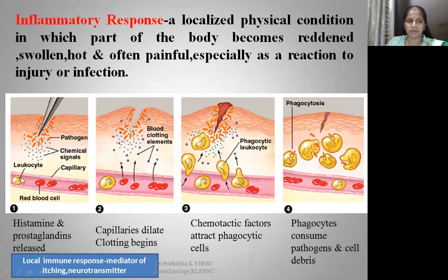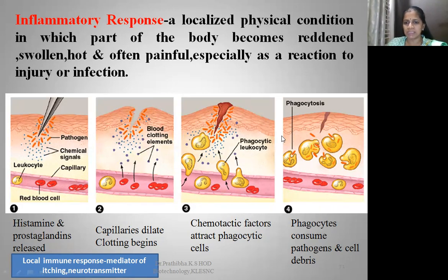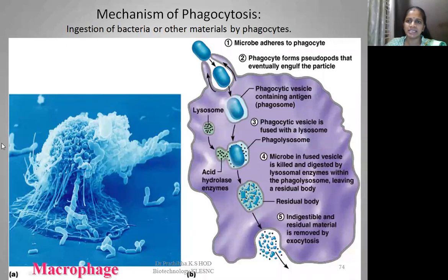Step two of the inflammatory response: capillaries dilate and clotting begins due to the presence of platelets and fibrinogen clotting factors. Step three: chemotactic factors — histamines and prostaglandins — attract phagocytic cells. Through diapedesis, WBCs squeeze out of the blood capillaries and fight the infection through phagocytosis. Phagocytosis degrades and kills the foreign invaders. Phagocytes consume pathogens and cell debris. This is the inflammatory response carried out by neutrophils.